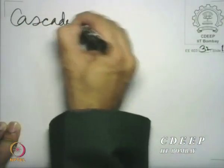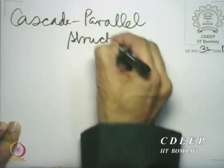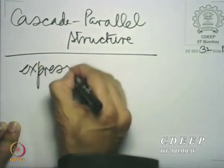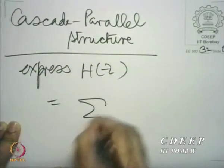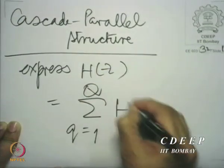In a parallel structure, you are trying to express the system function as a sum of different system functions. So the idea is express H(z) equal to summation q equal to 1 to capital Q, H_q(z).